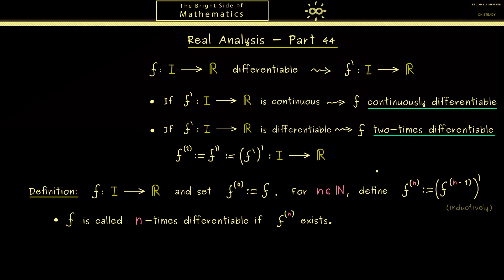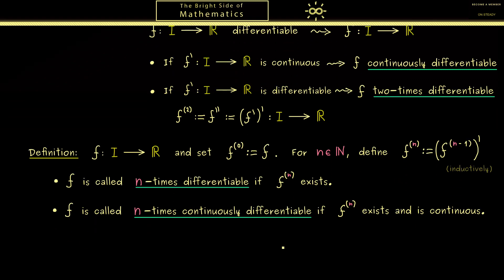Then the next step would be to generalize the term that f is continuously differentiable. Hence now we would say that f is n times continuously differentiable. And of course it just means that the nth derivative which should exist is also continuous. So you see all of this is not so complicated.